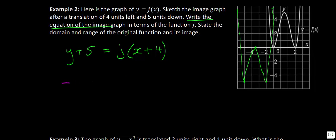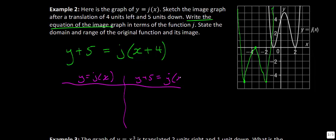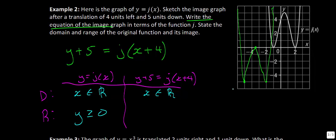For domain and range: this graph continues in both directions, so x is a member of the reals for both functions. The range for the original function was y greater than or equal to 0. Because we've moved down 5, the new range is y greater than or equal to negative 5.